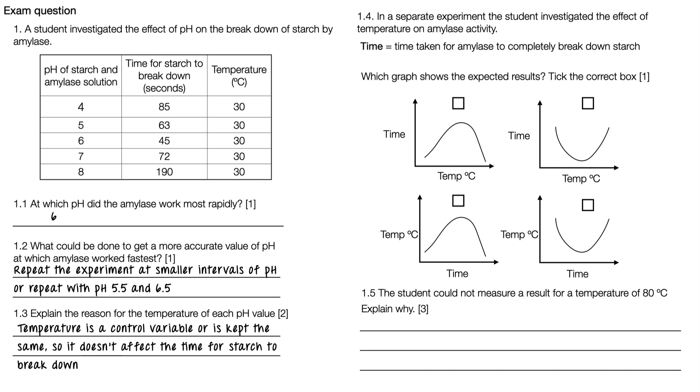We can see here that the correct box is the second one, top right. As the temperature increases, the time taken for the starch to completely break down reduces. After a certain temperature it increases because we have denaturing of the enzyme.